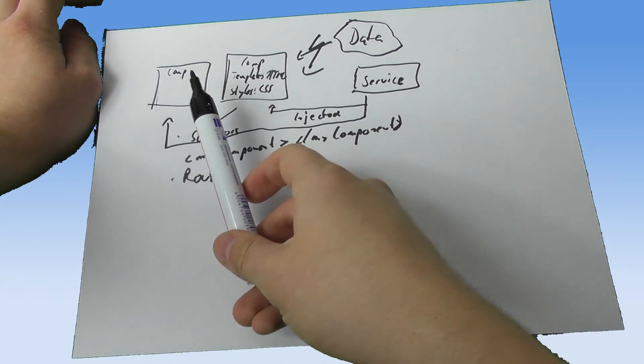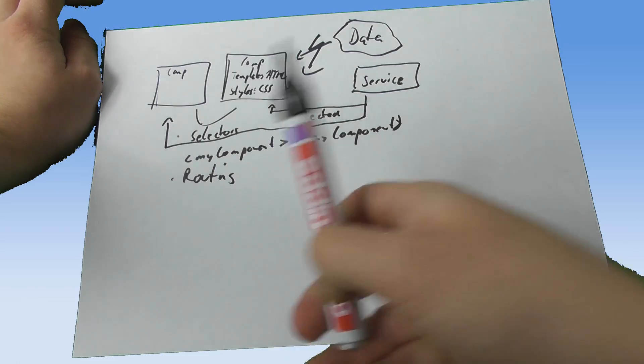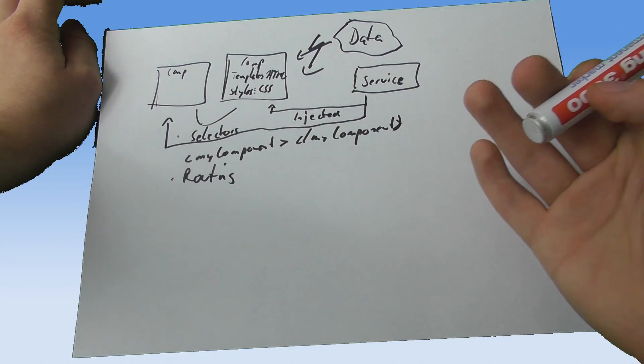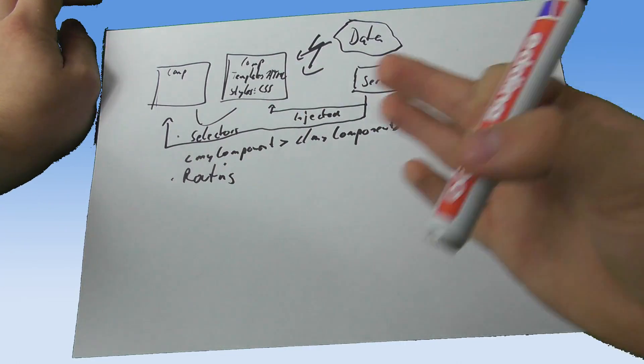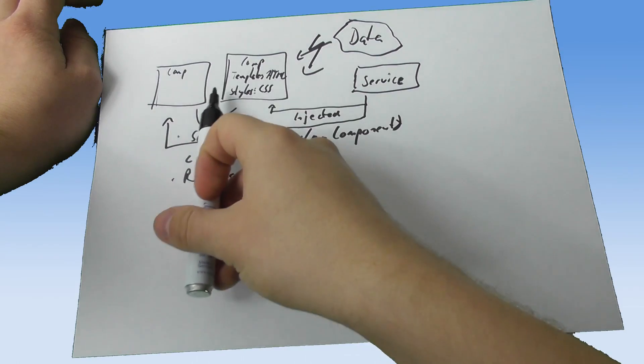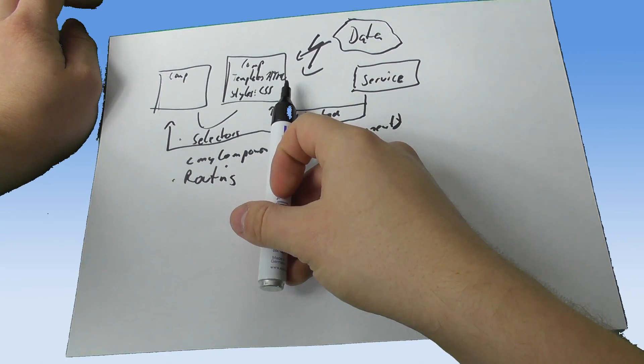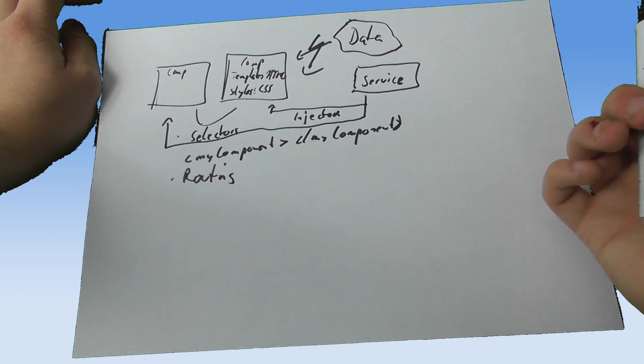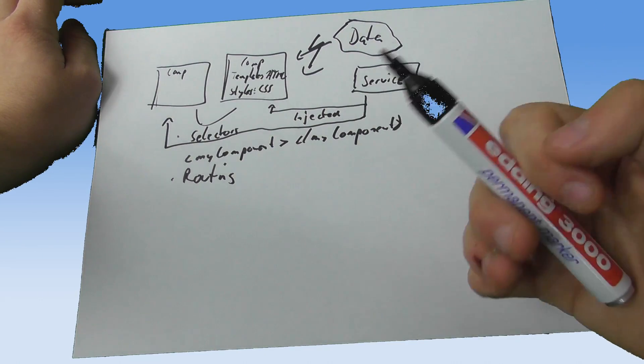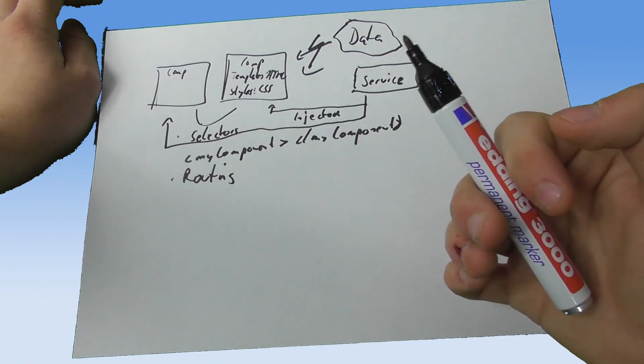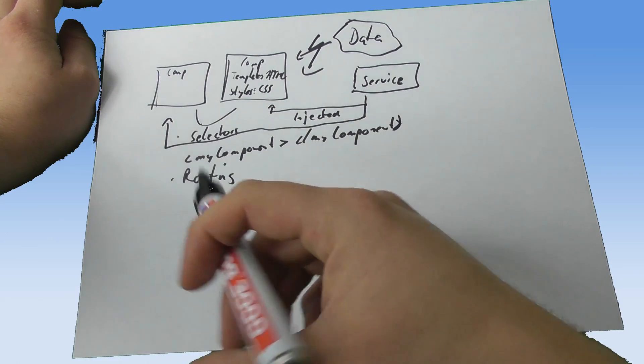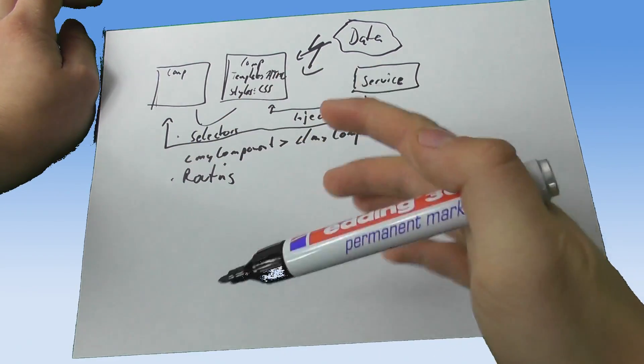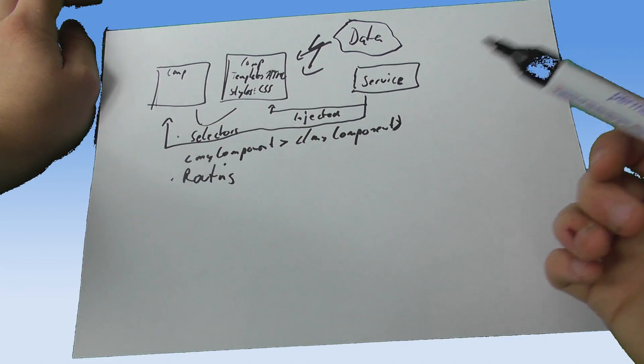Now in a component obviously we want to render something to the screen from time to time because in the end we want our user to see something. So we got our template HTML, but as you are aware a lot of the data we display in the application is dynamically created or updates. Therefore Angular 2 has several ways of binding data to a view.